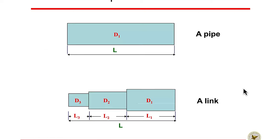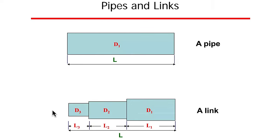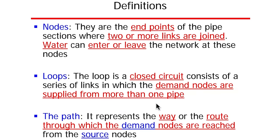A pipe is a segment of a link that has a constant flow, constant diameter, and no branches. So a pipe has constant length and constant diameter, while a link has constant length but varying diameter — we can have diameter one, diameter two, and diameter three all connected in series.